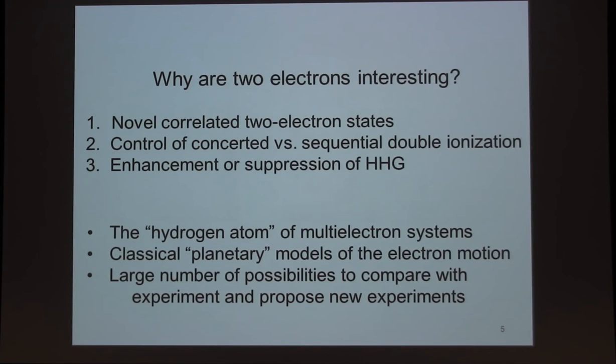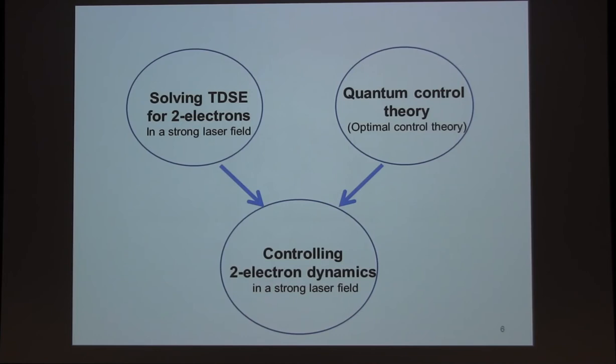One can think about more general types of motions that involve trying to control correlation and entanglement. If you think about all the possible motions of the three-party system, there's a vast number of things that can happen. We'd like to see if we can ultimately control these types of motions and then hopefully interact with the experiment. Because it's a simple system, the Hamiltonian's completely known, we can propose new experiments and hopefully get the interest of people in this room. Here are some things you might want to control: novel correlated two-electron states, control of concerted versus sequential double ionization. Can we, by changing the laser pulse, get the double ionization to be sequential or get it to be truly concerted as opposed to through a recollision mechanism? And can we enhance or suppress high harmonic generation?